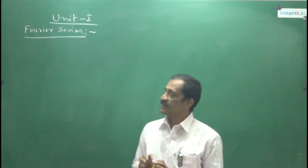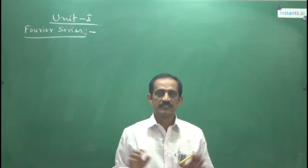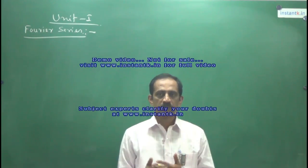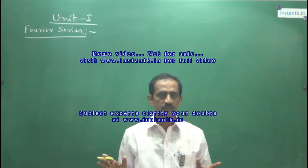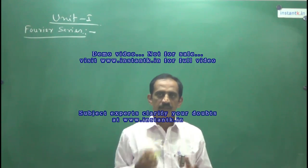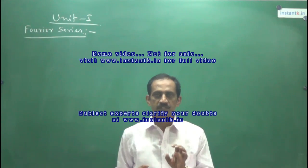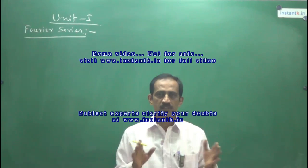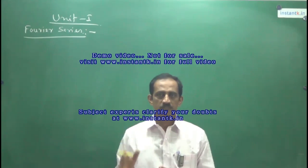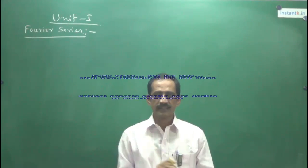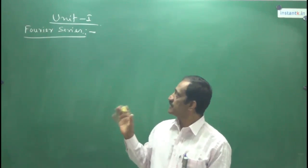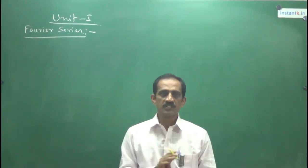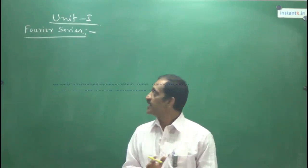Now we shall start the first unit that comes under Part A. In Part A there are four units, in Part B also four units. In Part B we completed three units: numerical method one, numerical method two, and Z transforms. In Part A, again four units are there, and the first unit is Fourier series.